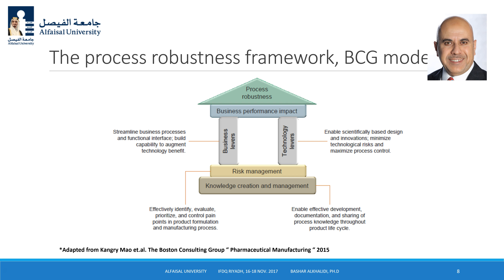Briefly, the Boston College Group Process Robustness Framework starts with knowledge creation and management by studying the product life cycle. Studying the product life cycle generates information with many parameters to study. Using a risk-based approach, the truly affecting parameters can be selected. Once those parameters are identified, two levers are applied — the technology lever and the business lever — which together build overall business performance impact and process robustness.